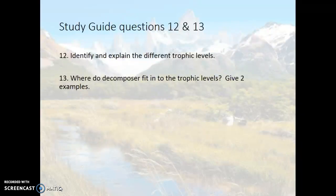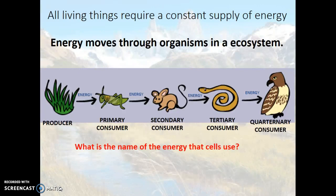Study Guide Questions 12 and 13. All living things require a constant supply of energy. The energy that cells use is called ATP. Where did that energy start? What comes even before producers? The sun goes right before the producers. Scientists organize ecosystems into levels based on how energy flows through the organisms in the system — notice the word 'energy' on each of these levels.